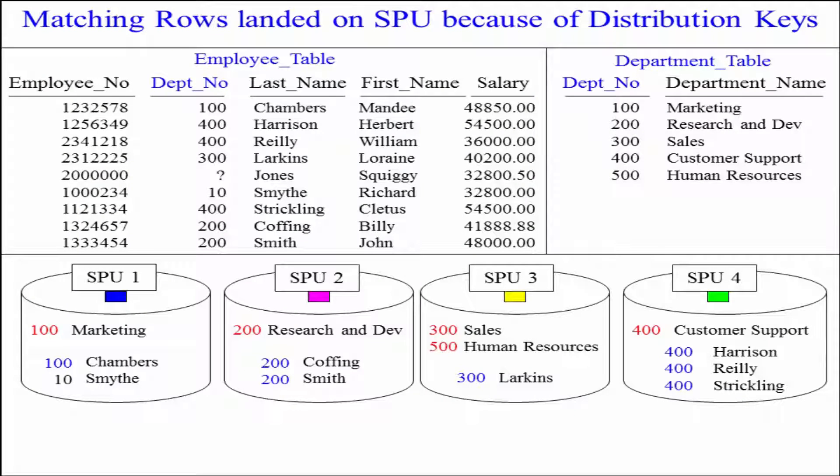All of the 100s from both tables went to SPU number 1. The 200s went to SPU 2, and as you can see, the matching rows are hashed. That's the beautiful part about hashing.